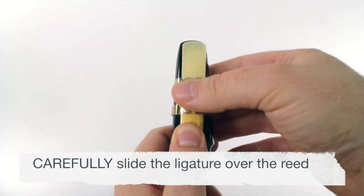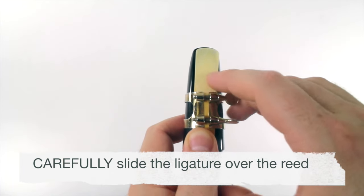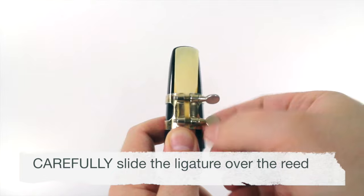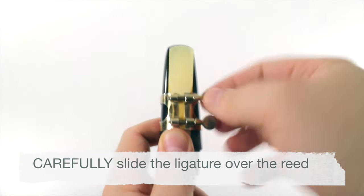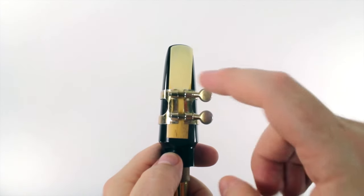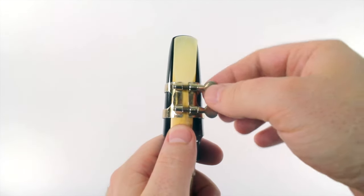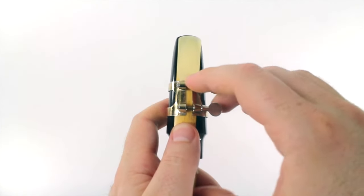Carefully slide the ligature down over the reed. You have to be really careful not to accidentally hit the tip of the reed. Remember, we don't want to break the reed. The ligature should go down over the dark part of the reed. If it's not going down far enough, loosen the screws and push it down.